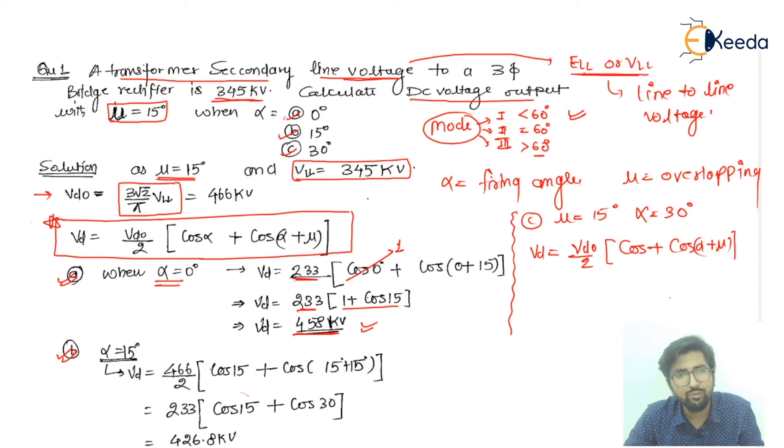If we talk about VD0 by 2, we have already calculated that is 233, and cos here will be cos alpha. And what is the cos alpha? Alpha is actually 30 degrees. So I will calculate first cos 30 degrees value. Then I will calculate cos 30 plus mu. What is the mu? 15. 30 plus 15, that is equal to 45 degrees. And after solving for this, I will get I am having the answer for that, that is 366.5 kilovolts.